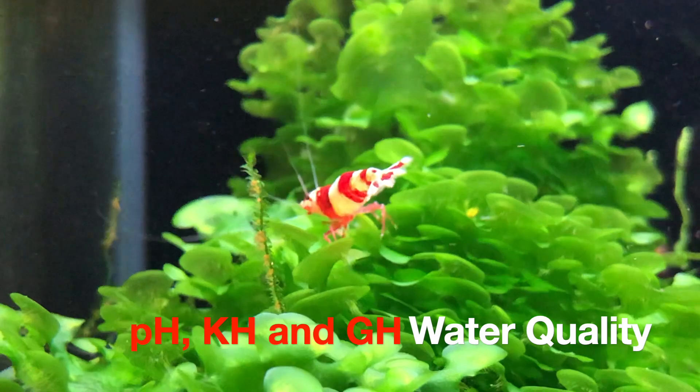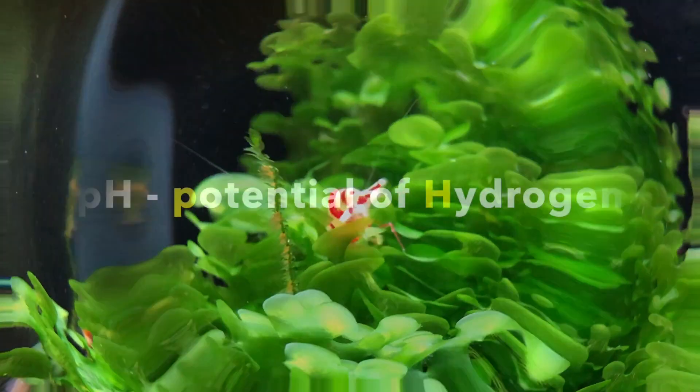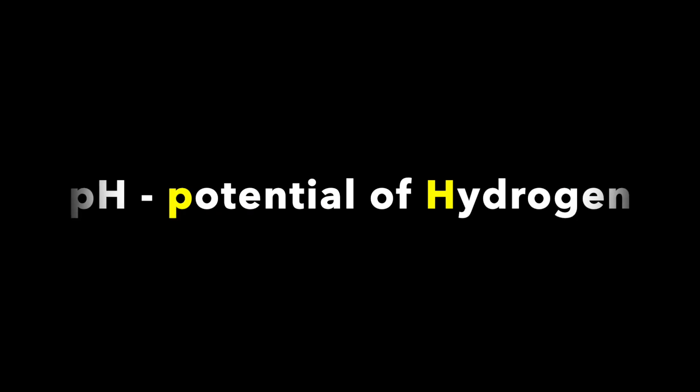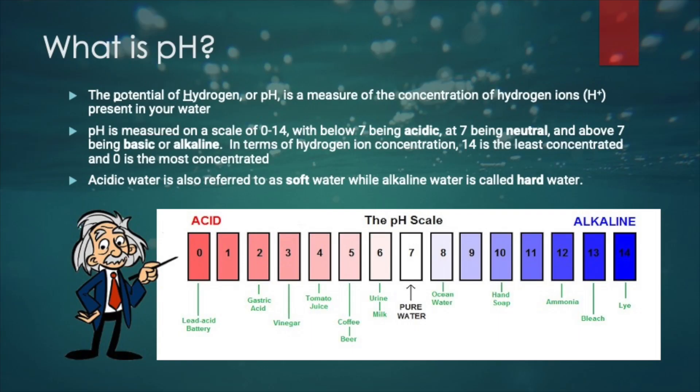To understand what these water parameters represent in chemistry: pH stands for potential of hydrogen. It is a measure of the concentration of hydrogen ions (H+) present in your water. The pH scale is a logarithmic scale, which implies that one pH unit is 10 times stronger or 10 times weaker than the one below or above it.